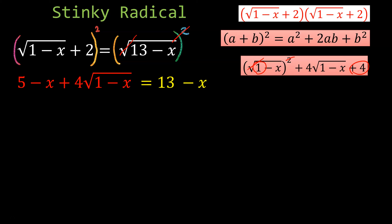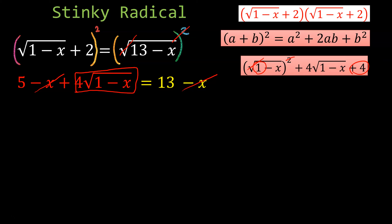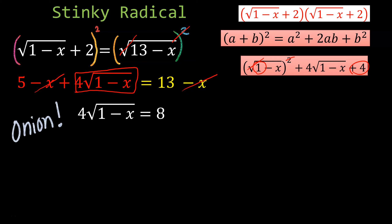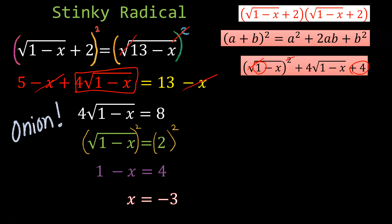We now see another radical, so we get that radical by itself on one side and everything else on the other side. The minus x on the left and minus x on the right cancel out. Subtracting 5 from both sides — look at that, it's an onion! Peel the layers: divide by 4, square both sides, and solve for x. x equals negative 3.